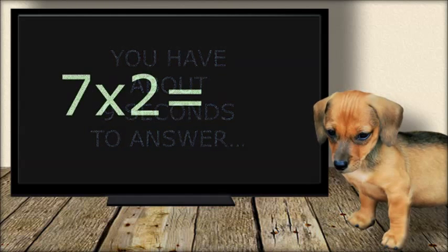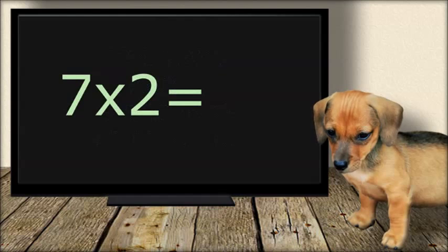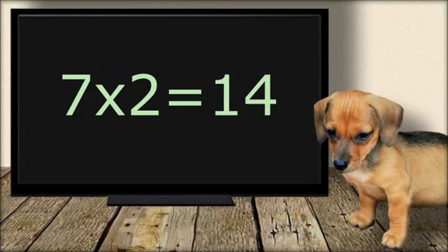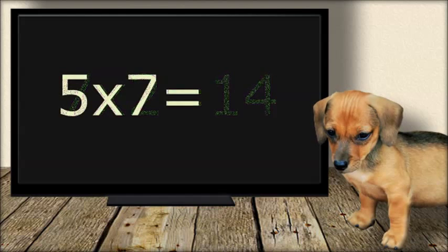7 times 2 equals... 14. 5 times 7 equals... 35.